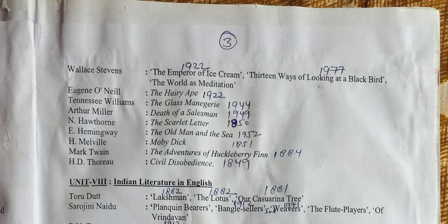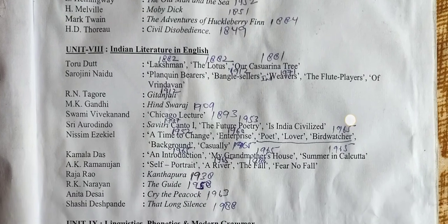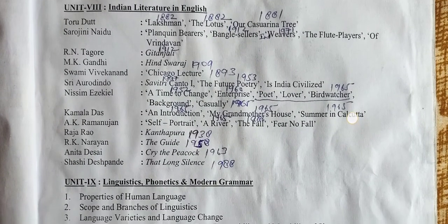Wallace Stevens — The Emperor of Ice Cream, Thirteen Ways of Looking at a Blackbird, The World as Meditation. Eugene O'Neill — The Hairy Ape. Tennessee Williams — The Glass Menagerie. Arthur Miller — Death of a Salesman. Nathaniel Hawthorne — The Scarlet Letter. Ernest Hemingway — The Old Man and the Sea. Herman Melville — Moby Dick. Mark Twain — The Adventures of Huckleberry Finn. H.D. Thoreau — Civil Disobedience.